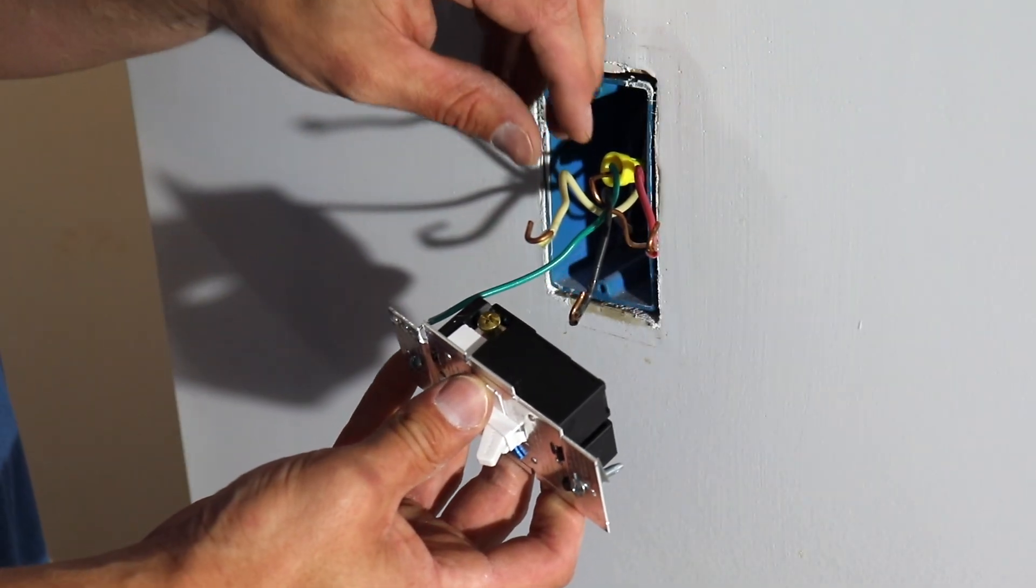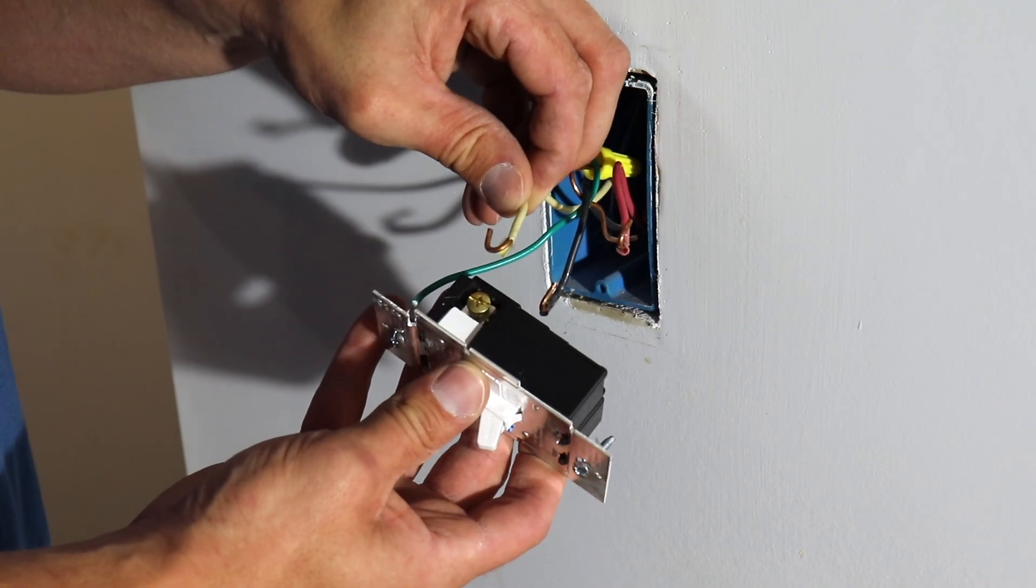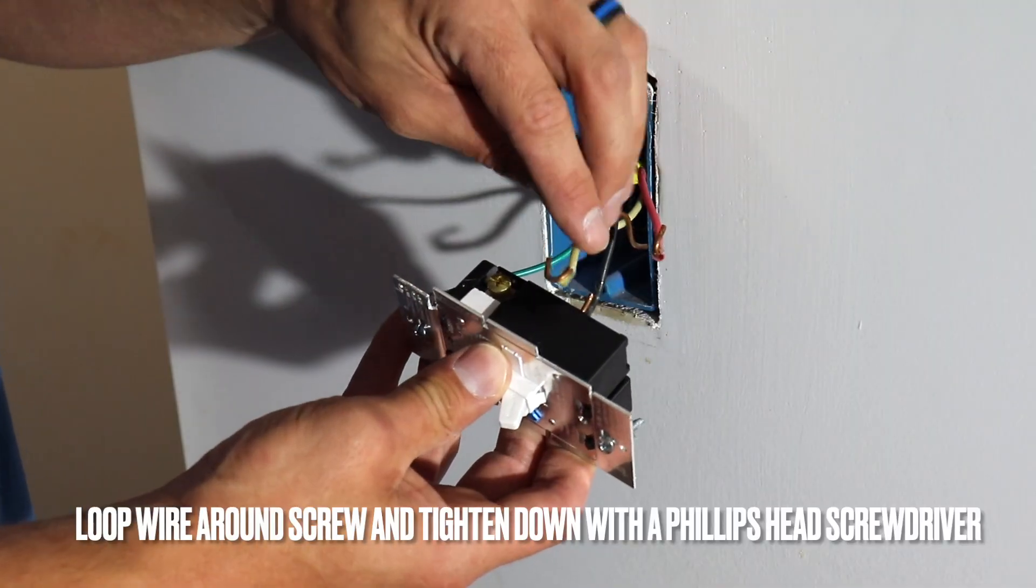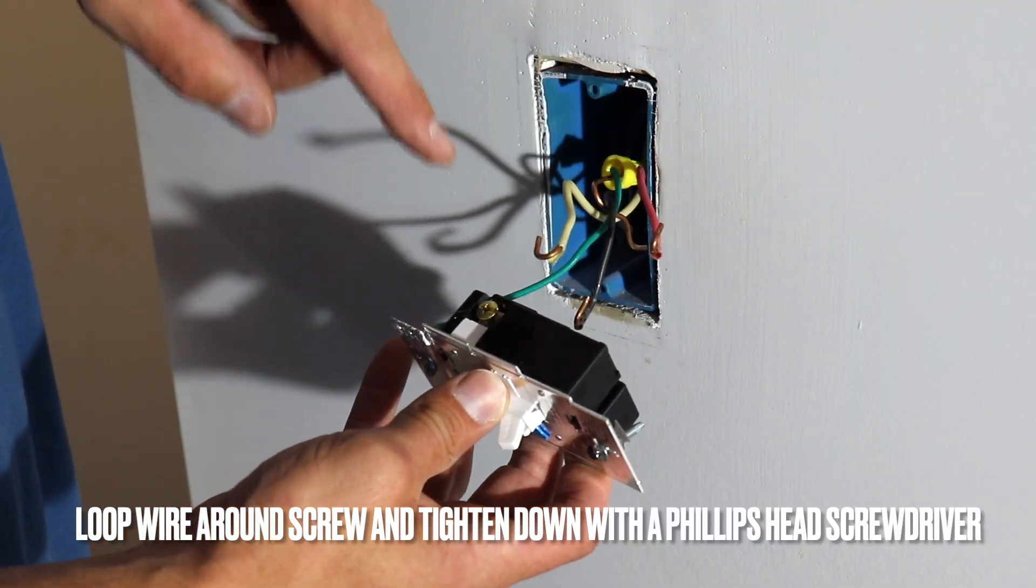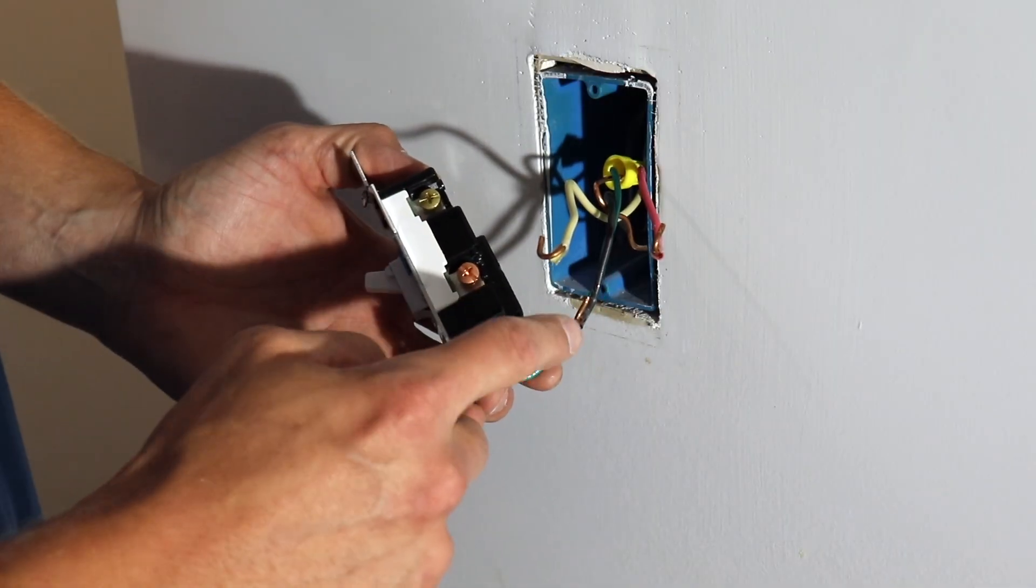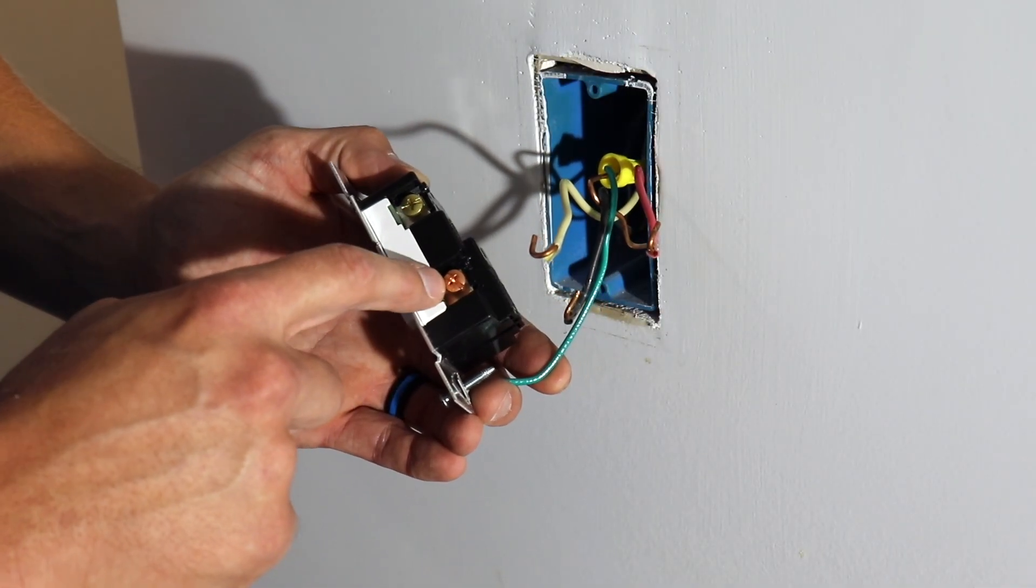So to hook these up, all you're going to do is take this white wire and loop this half circle around this screw. And then we're just going to repeat the process for the red traveler on this screw and then the black wire on this common terminal.